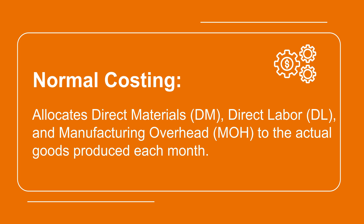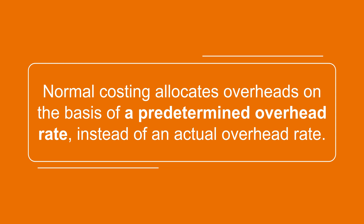This type of estimation is very important for planning and budgeting the next period, which could be for the quarter, semiannual, or annual. One important aspect of normal costing is that it allocates overhead costs on the basis of a predetermined overhead rate instead of an actual overhead rate. This is used in determining the product cost where there is no sudden increase in cost, allocating manufacturing overhead costs equally according to the predetermined overhead rate.